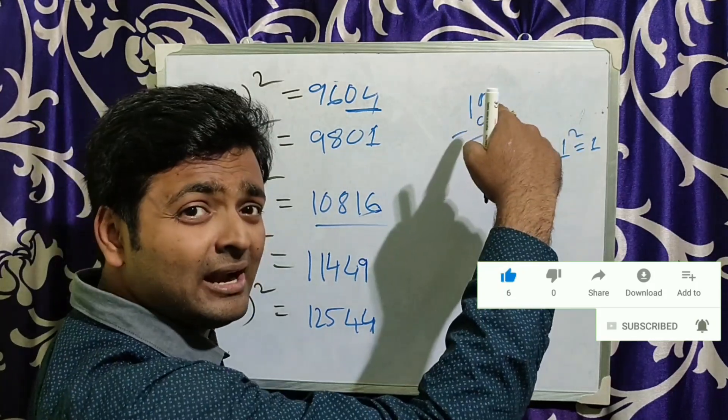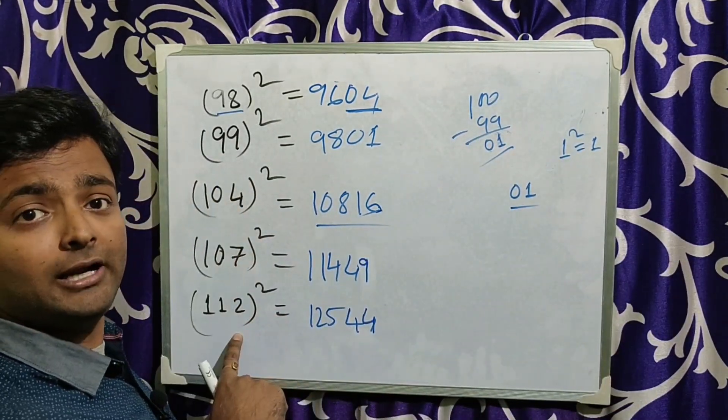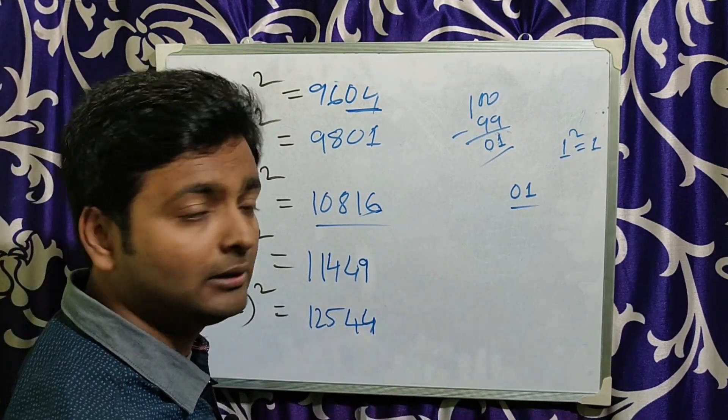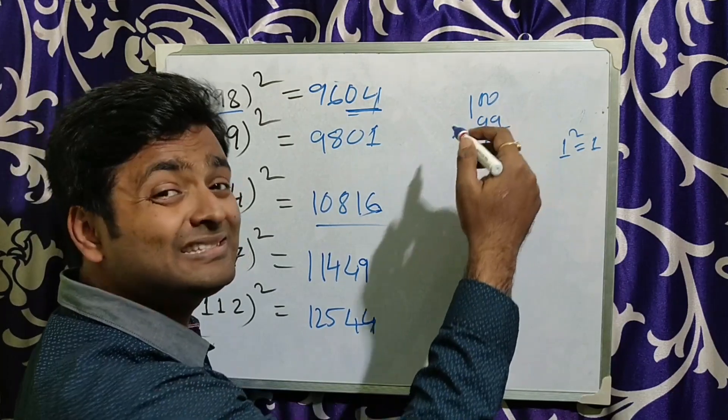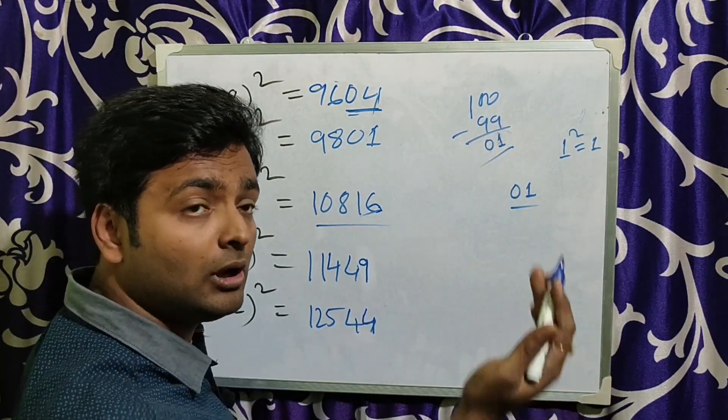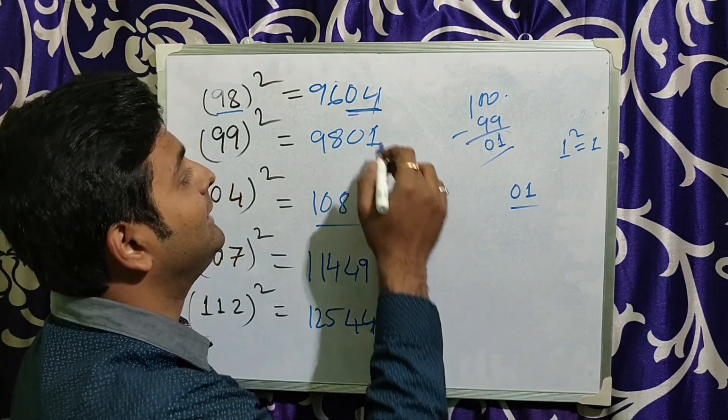Now the number is less than 100, so I have to subtract it. If the number is greater than 100, I have to add the number. But the last 2 digit how to find? Just what is less than or what is greater than from 100, that square you have to find.